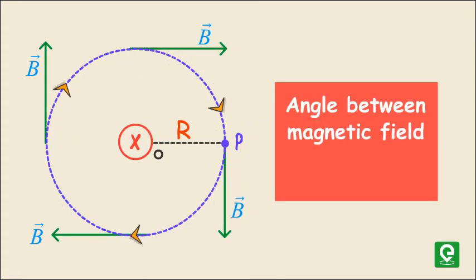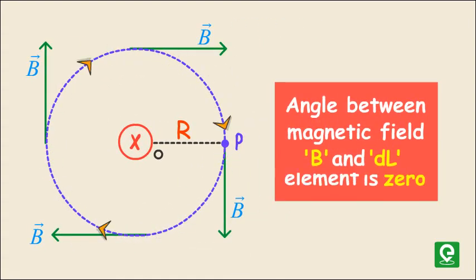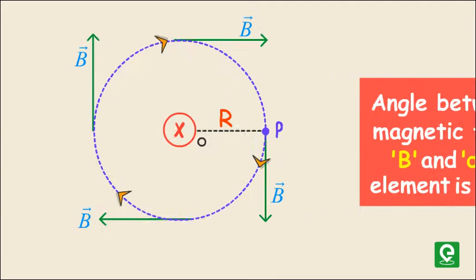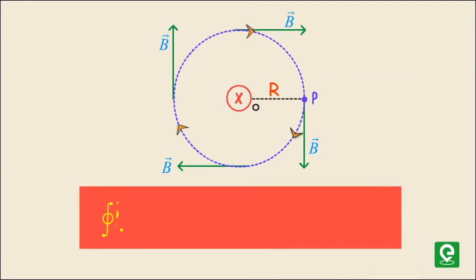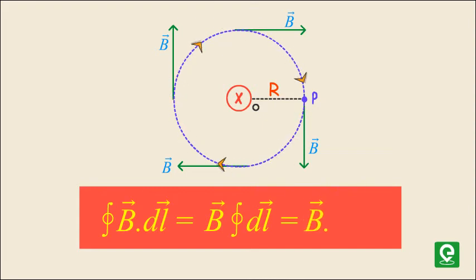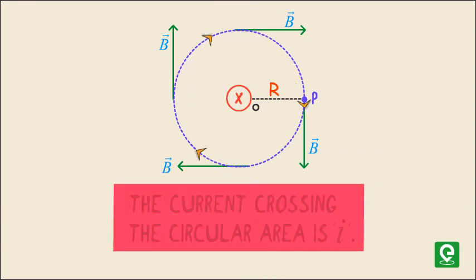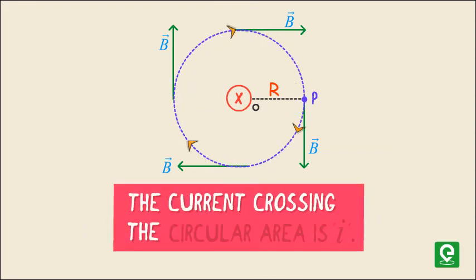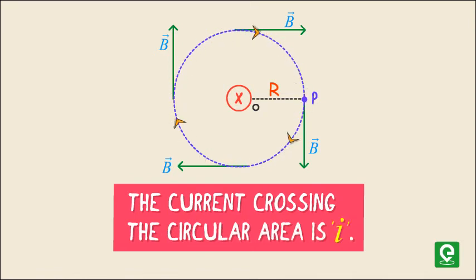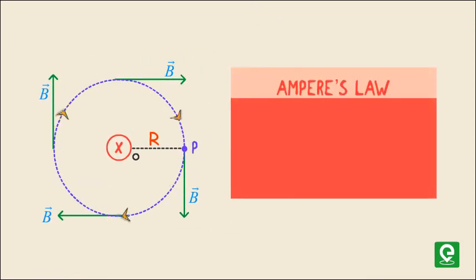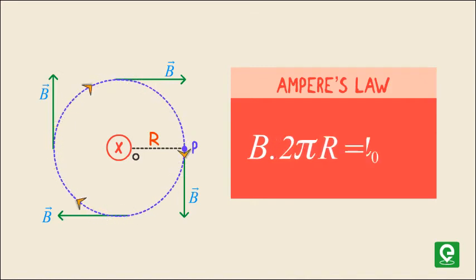The angle between magnetic field B and dl element is equal to zero. Thus, the closed integral of B·dl equals B∮dl, which equals B times 2πr. The current crossing the circular area is I.